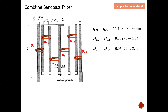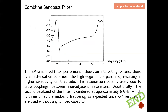Let's look at the simulated frequency response of the comb line band pass filter. The EM-simulated filter performance shows an interesting feature: there is an attenuation pole near the high edge of the passband, resulting in high selectivity on that side. This attenuation pole is slightly due to cross-coupling between non-adjacent resonators. Additionally, the second passband is centered at approximately 6 GHz — about three times the mid-band frequency — as expected since quarter-wave resonators are used without any lumped capacitor.